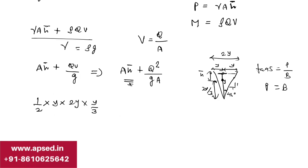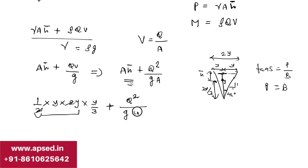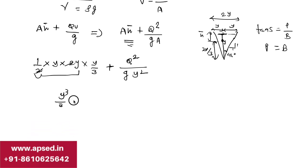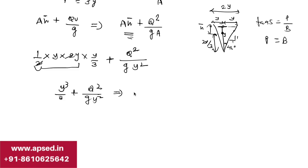So the specific force term A·h̄ + Q²/(g·A) for this triangular channel becomes: y² × (y/3) + Q²/(g·y²) = y³/3 + Q²/(g·y²). This is the specific force expression for the triangular channel, and we will equate it at the two sections.